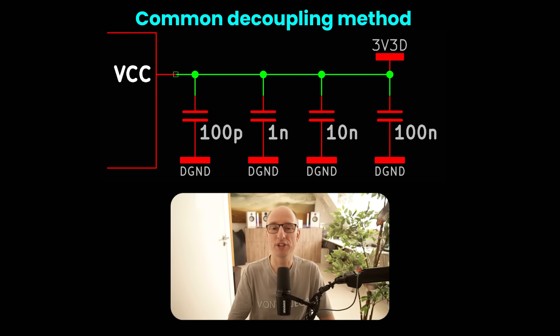Now that you see how capacitors secretly change personality with frequency, how do you know if your decoupling network is helping or sabotaging you? The whole idea of decoupling supplies is to create a very low supply impedance over a wide frequency range using capacitors, because they form a short circuit for higher frequencies and have infinite resistance at DC. The most common way to do that uses multiple capacitors, with the idea that each deals with a certain frequency range — small values for high frequencies, larger values for low frequencies.